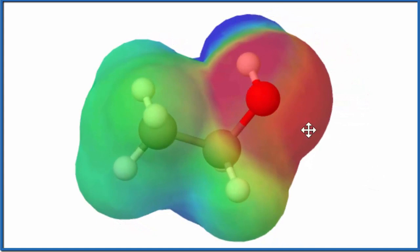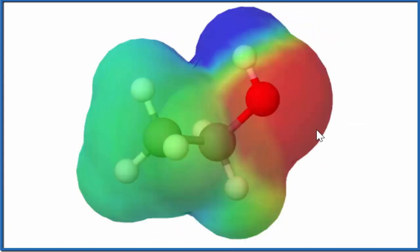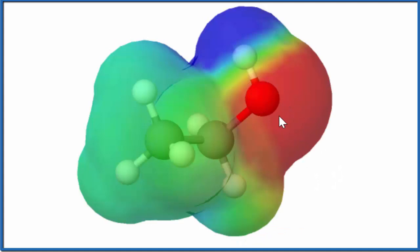So the red, that's going to be more negative, and the blue is more positive. And you see, for the oxygen, around the oxygen we have more negative, and around the hydrogen more positive, the blue there.